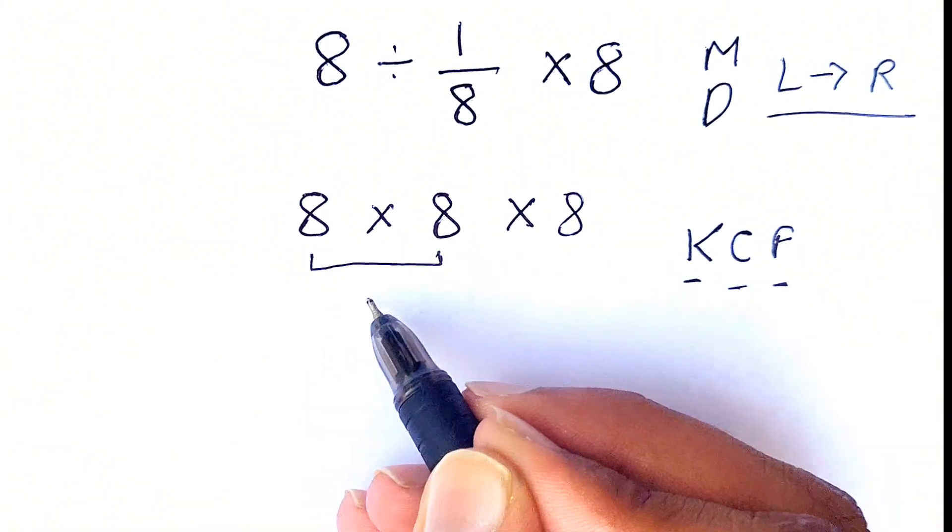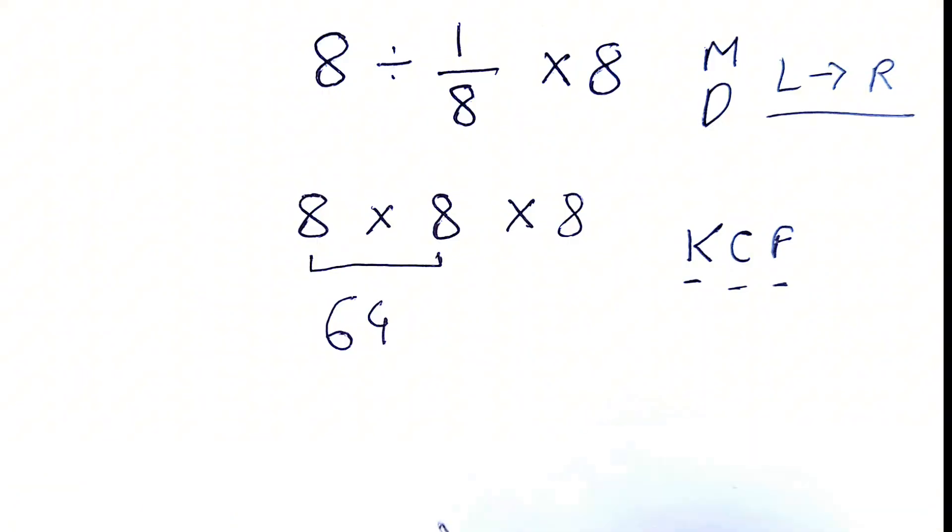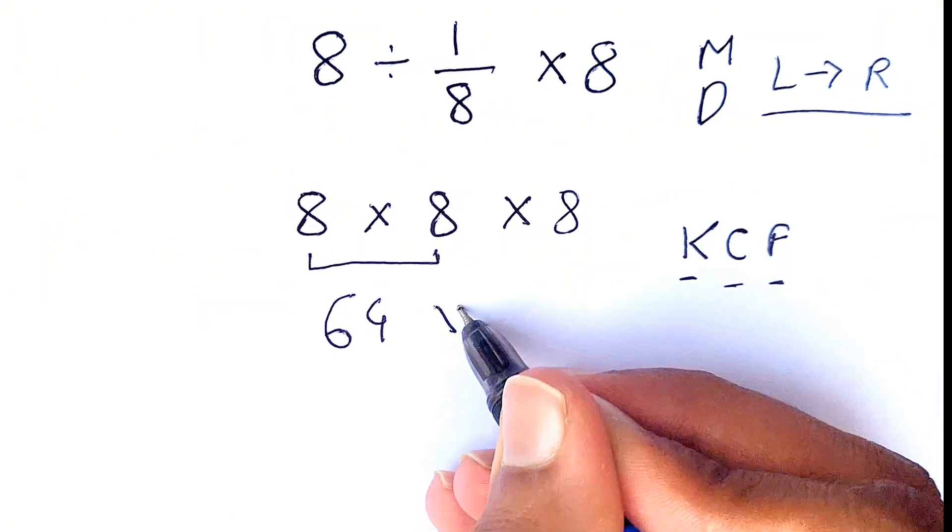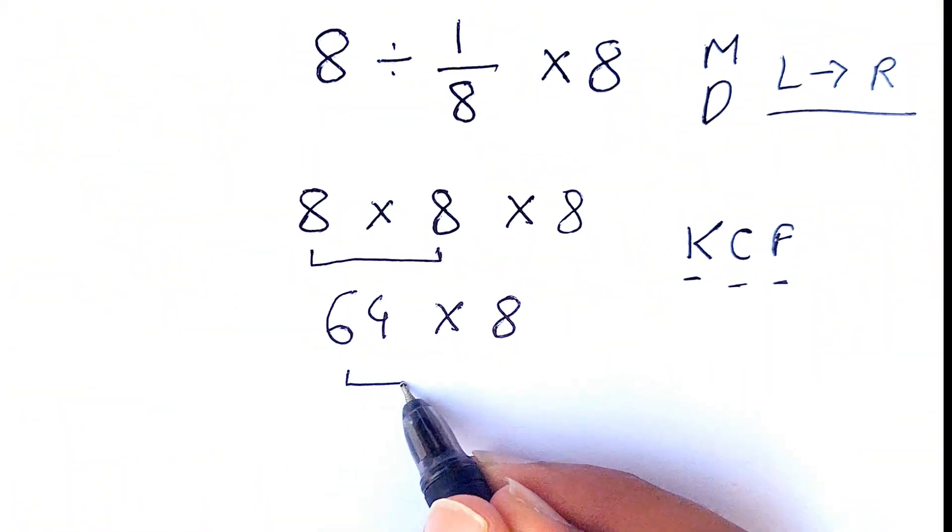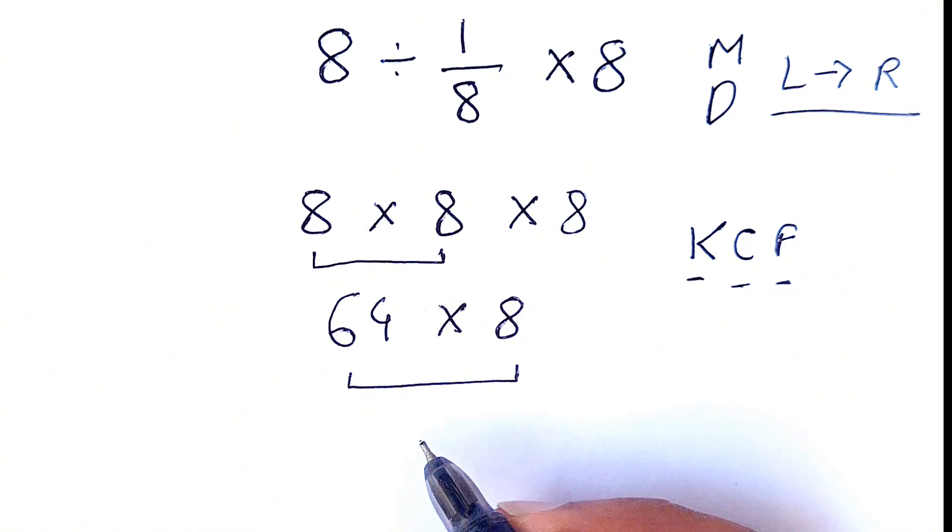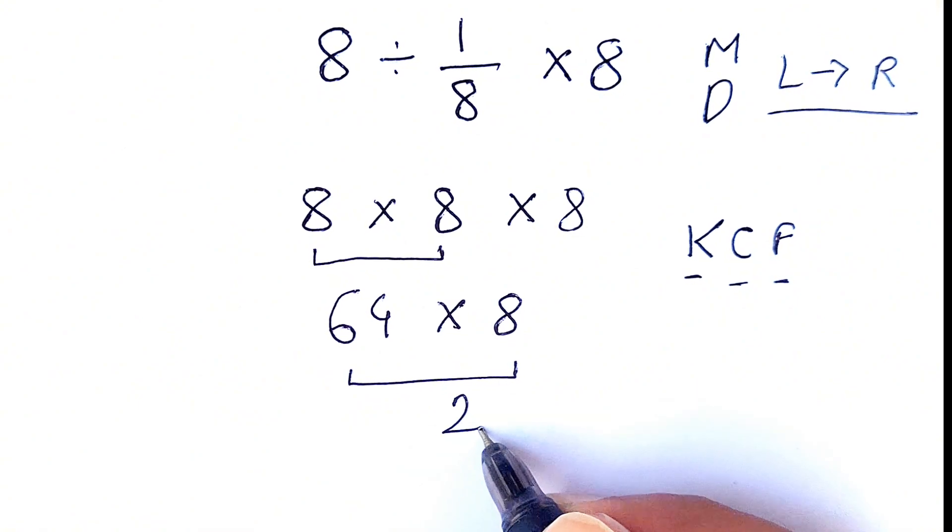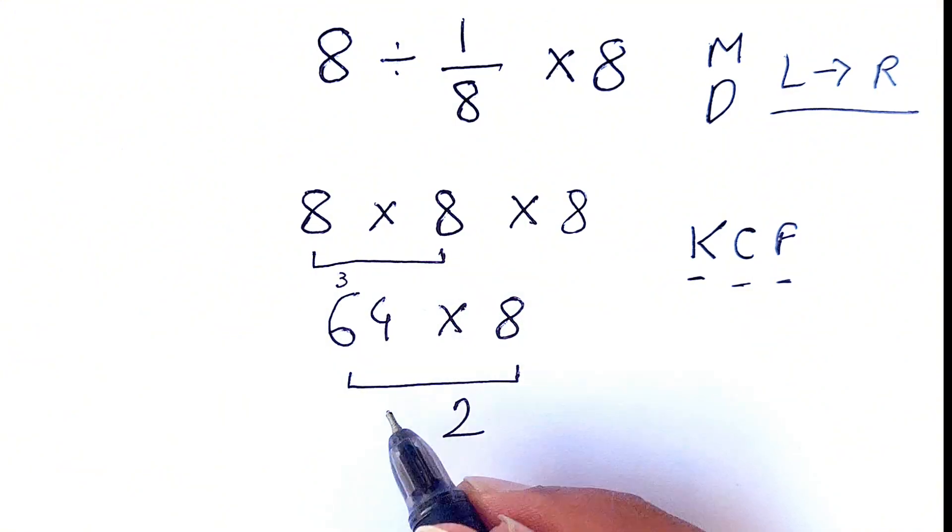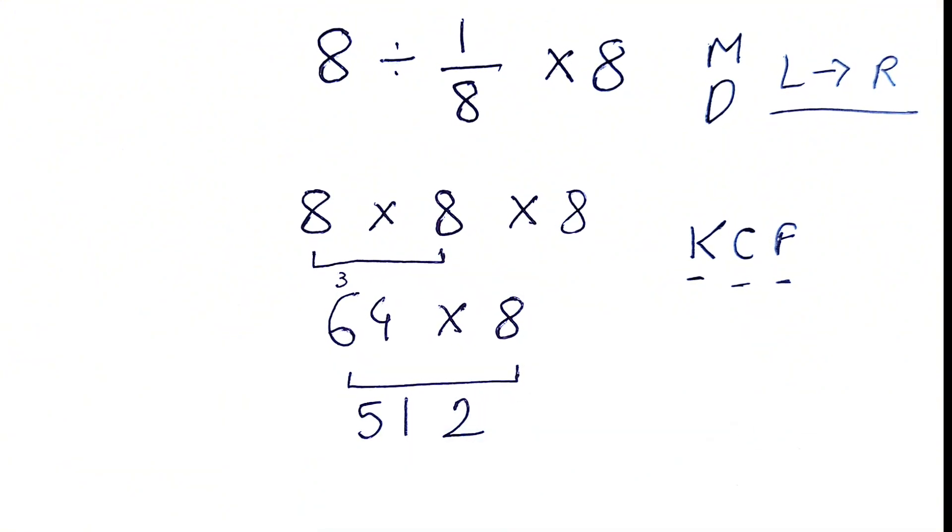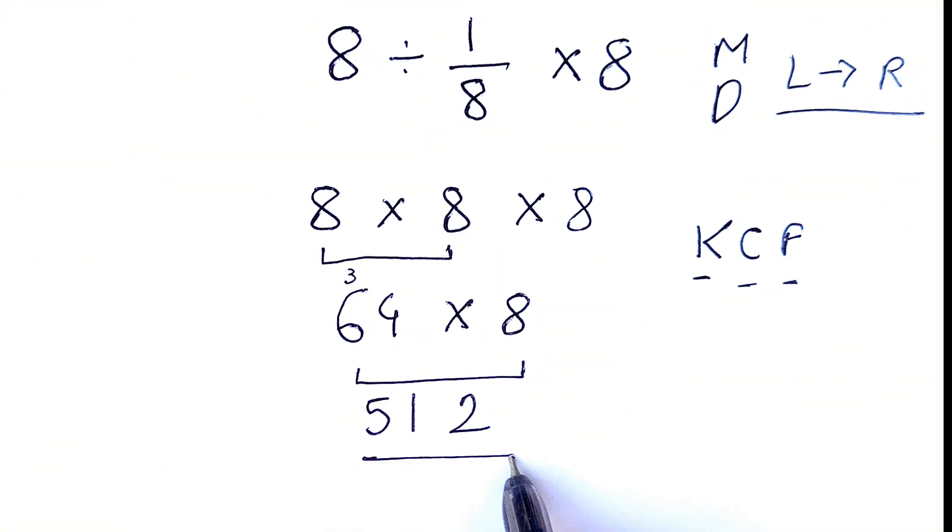As the signs are the same here, to go from left to right, we'll solve this 8 times 8, which gives us 64. Now we are only left with 64 times 8. So 64 times 8 can be solved as: 8 times 4 is 32, so we'll write 2 here and carry the 3. Then we need to do 8 times 6, which is 48, and 48 plus 3 is 51. So the final correct answer is 512.